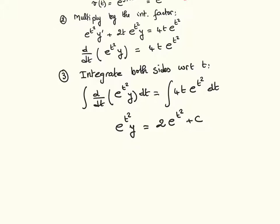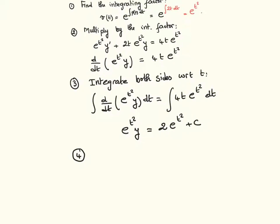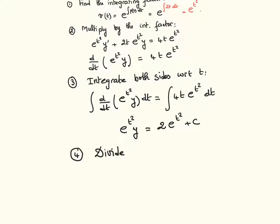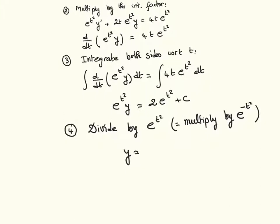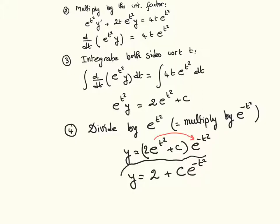And now we can write this as the fourth and last step. We divide both sides by e to the t squared, which is the same thing as multiplying both sides by e to the minus t squared. So we get y on the left-hand side. And on the right-hand side, we will get 2 times e to the t squared plus c, multiply this by e to the minus t squared. So we get this multiplied by this will just be 2 and the rest. So it's 2 plus c e to the minus t squared as the final solution.